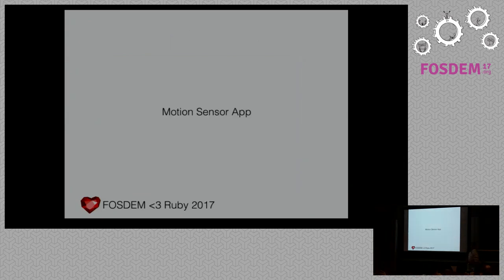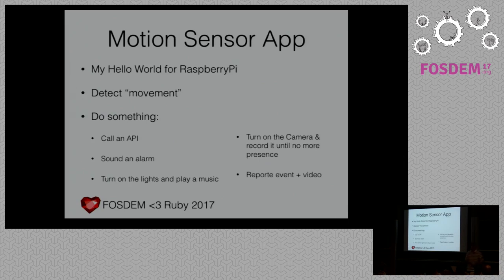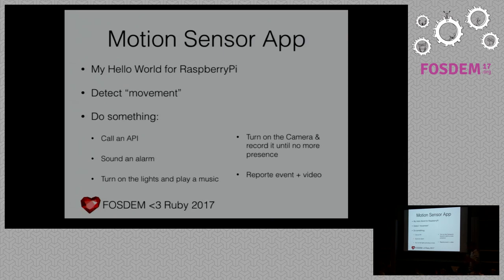Now let's move to the motion sensor app — that's my Hello World for Raspberry Pi. Basically what I want from it is simple: detect a movement, and when you do, call an API; sound an alarm using an external buzzer; turn on lights and play music via Pi interface; turn on the camera, record a video, and stop when there's no more presence; then report an event with video. That's the kind of stuff you can do.